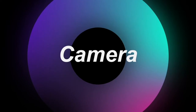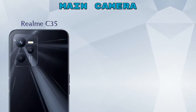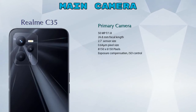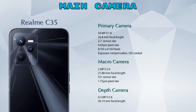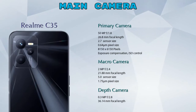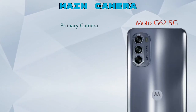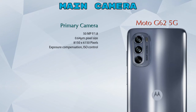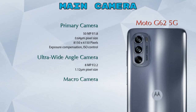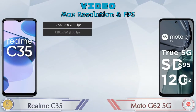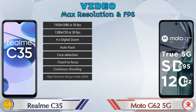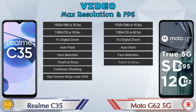Now let's see the details about our favorite feature — the camera. Talking about the rear camera, we can see three cameras on the Realme Narzo 35: a primary camera, a macro camera, and a depth camera. The Moto G62 5G also has three cameras: a primary camera, an ultra-wide-angle camera, and a macro camera. For video recording, both phones have 8 different types of features available.